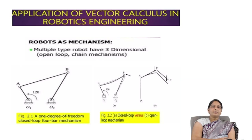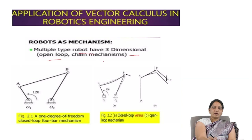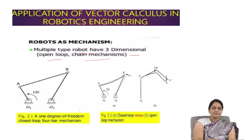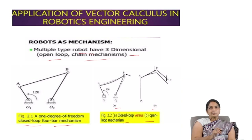In robots as mechanisms, multiple types of robots operate in three dimensions. Here we use open-loop mechanisms and chain mechanisms, as well as closed-loop four-bar mechanisms. Based on these mechanical structures, calculus is applied in robotics engineering.